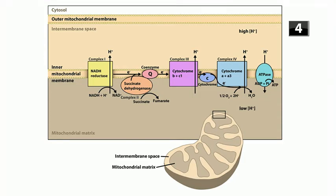Now we're ready to use those electron donors to make some ATP. Let's talk about the electron transport chain and oxidative phosphorylation. This takes place in the mitochondria, specifically on the inner mitochondrial membrane. Mitochondria have an outer and an inner mitochondrial membrane, and this process takes place on the inner membrane.